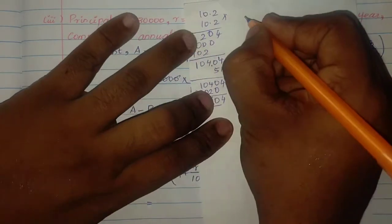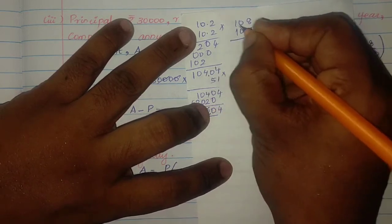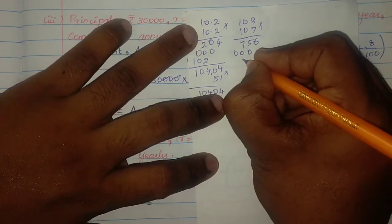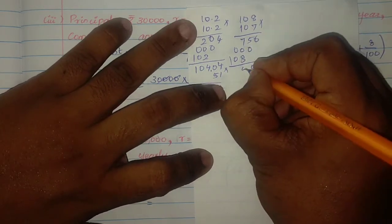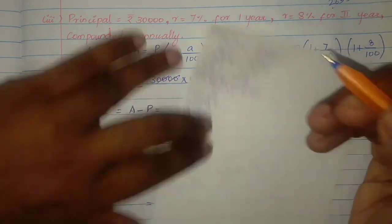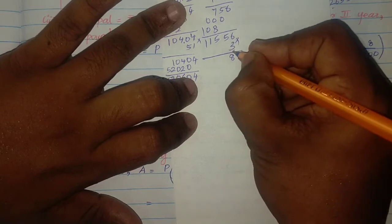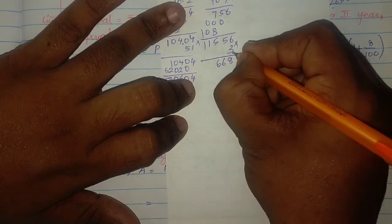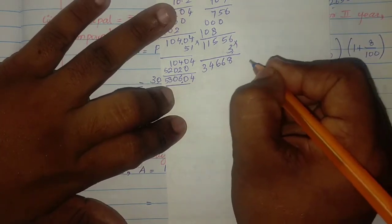Multiply 108 × 107: working through the multiplication gives 11,556. Then 3 × 11,556: 6×3=18, 5×3=15+1=16, 5×3=15+1=16, 1×3=3+1=4, 3. Result is 34,668.